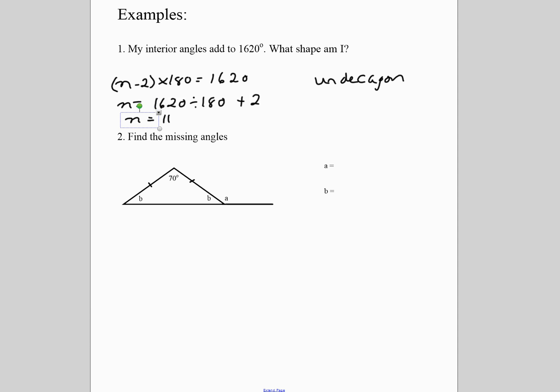If we look at this picture down here about finding missing angles, we know that the sum of the angles in a triangle adds up to 180. We know that this is an isosceles triangle, so these two angles here must be equal. We do 180 minus 70, and we get 110. Then we divide it by 2, and we get 55. So B must be 55. Then A and B are supplementary, so we do 180 minus 55, and we get 125 degrees.